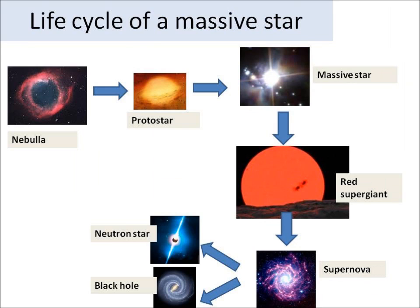Stars with a bigger mass than the Sun are hotter and brighter. Eventually they become a red supergiant. At the end of that period as a supergiant, it begins to collapse due to gravity and then it explodes — that explosion is called a supernova. The outer layers of the supergiant are cast off and expand outwards. Then gravity pulls back the remains together and it will either form a black hole or a neutron star.